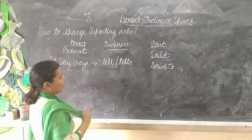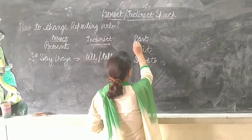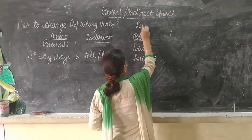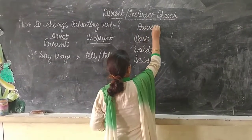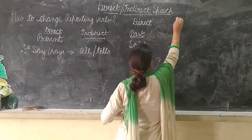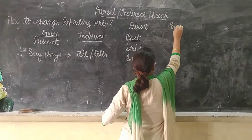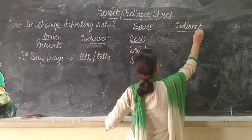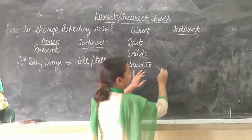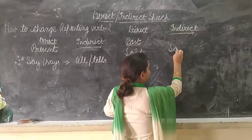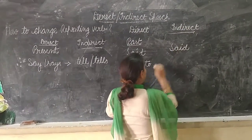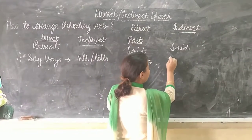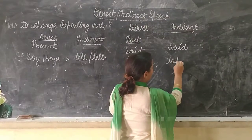Now the past one: when 'said' is in direct speech and we change it to indirect speech, 'said' will remain 'said' only. And 'said to' will be converted to 'told'.